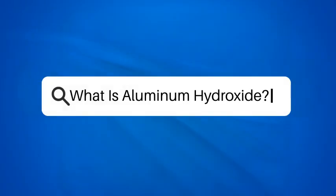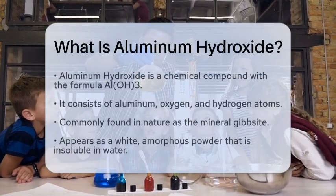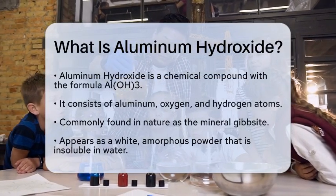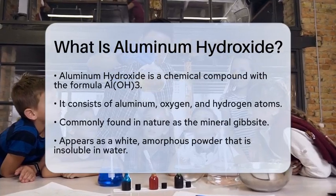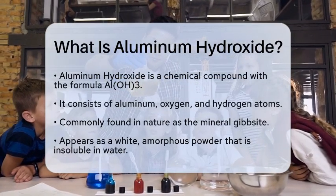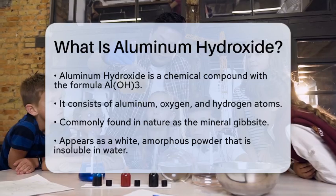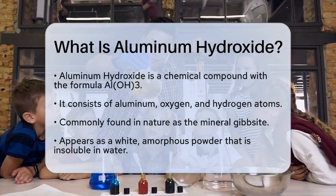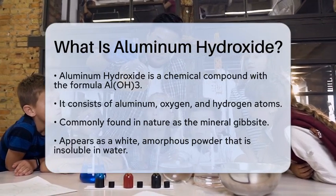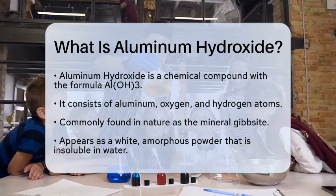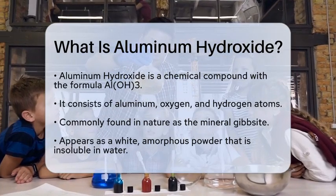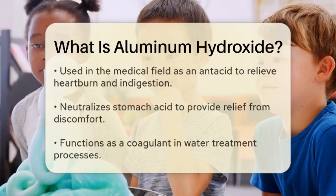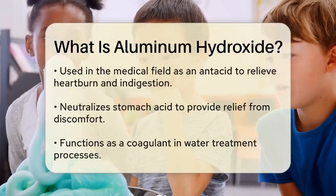What is Aluminum Hydroxide? Imagine a substance that plays a role in everything from medicine to water purification. This compound is known as Aluminum Hydroxide, and it is a chemical compound with the formula Al-O3. It consists of Aluminum, Oxygen, and Hydrogen atoms. Aluminum Hydroxide is commonly found in nature as a mineral called Gibbsite. It is a white, amorphous powder that is insoluble in water.